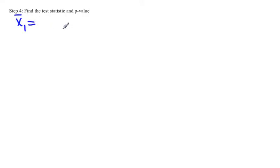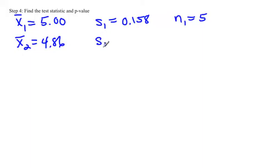The next step is to find the test statistic and p-value. You need to find the sample mean and standard deviation for both samples. It's easier to use technology for these. The first sample mean is 5.0, and its standard deviation S₁ is about 1.158. The first sample size was 5. The second sample mean x̄₂ was 4.86, its standard deviation S₂ was 0.114, and n₂ was also 5. Though in an independent test the n's don't have to be the same, it is more robust if they are.